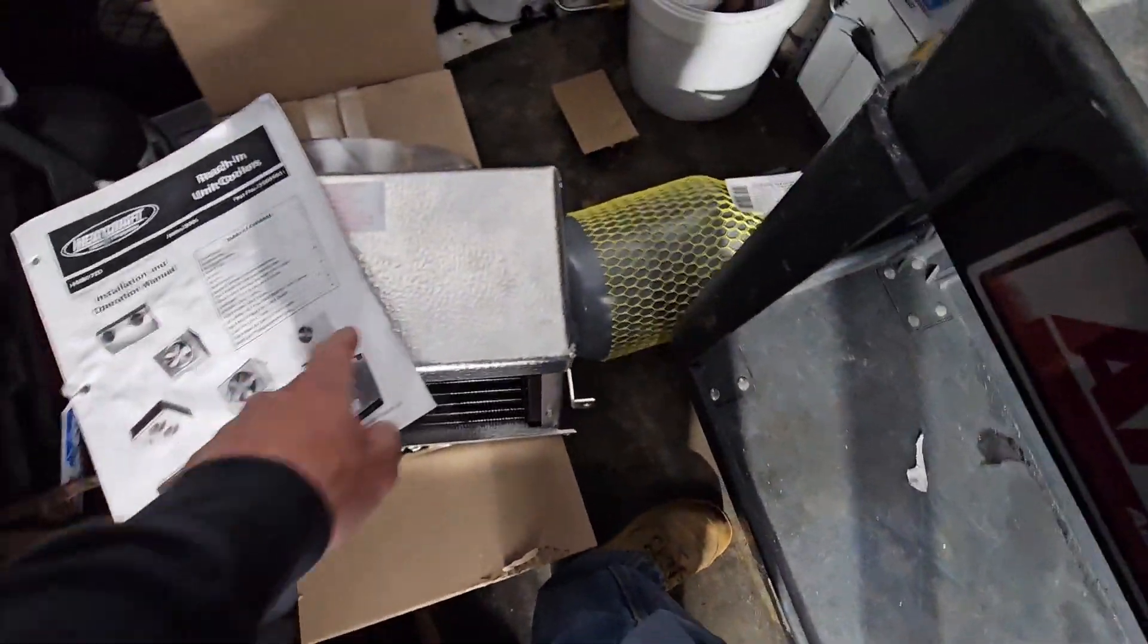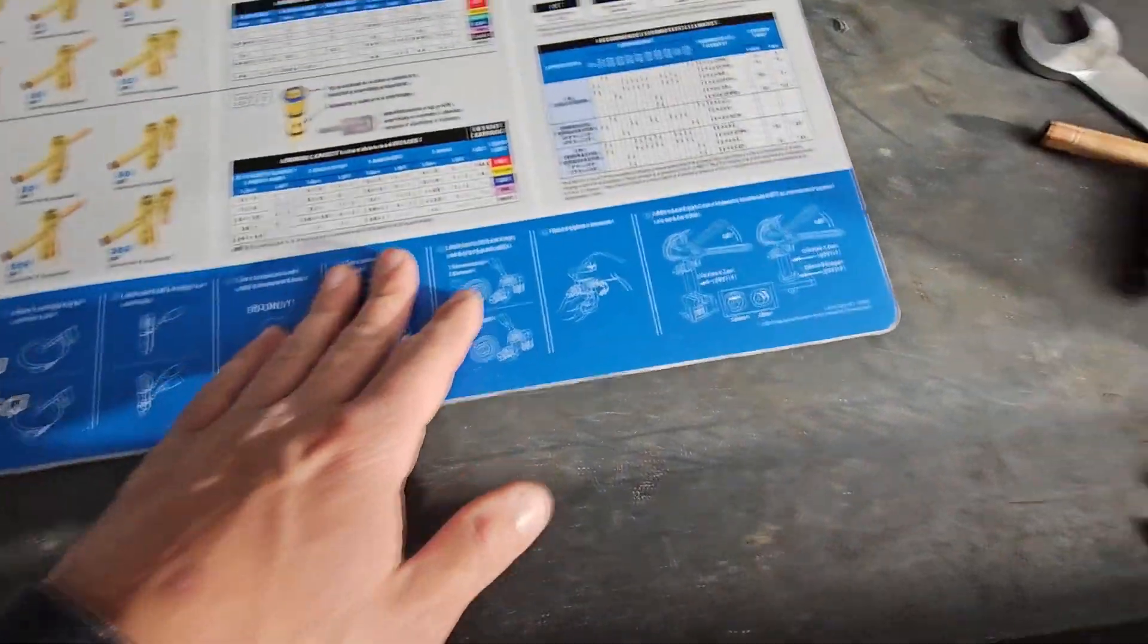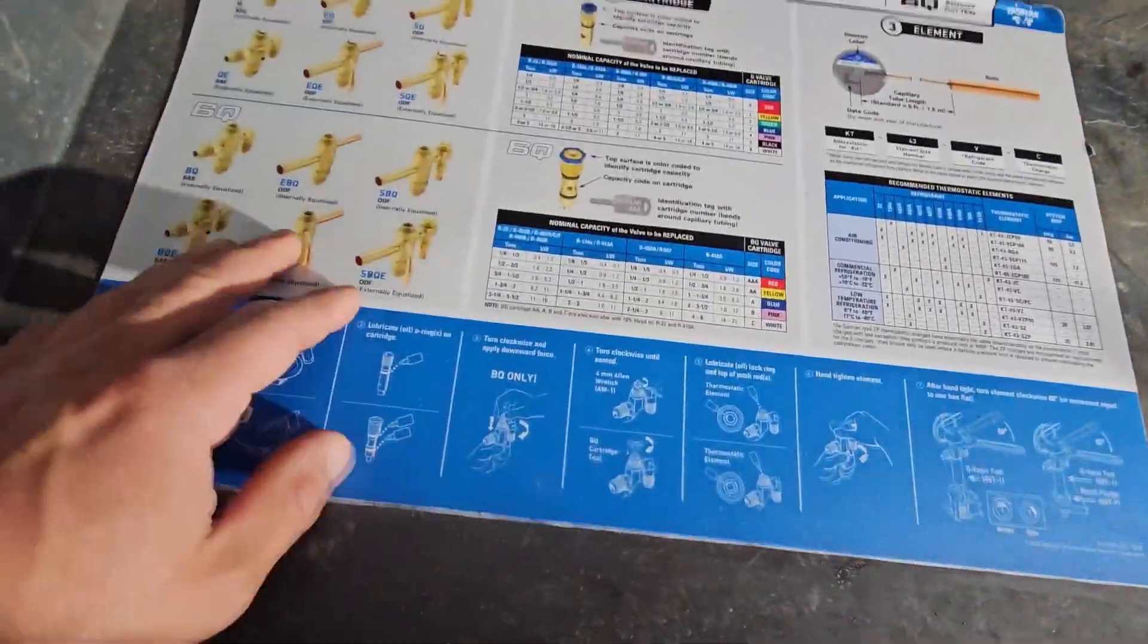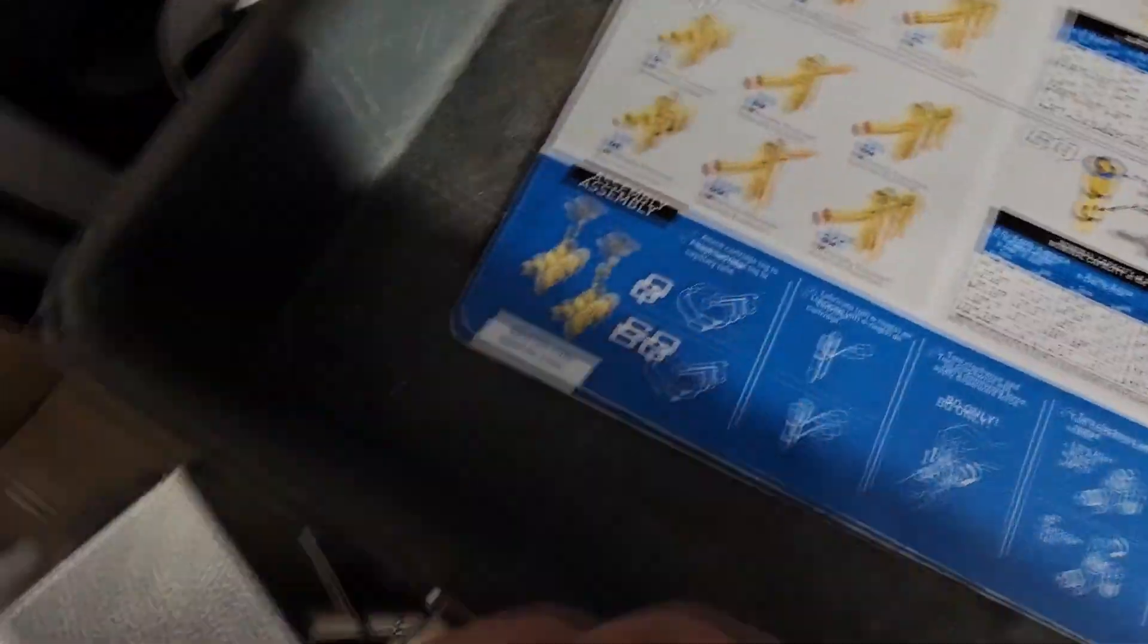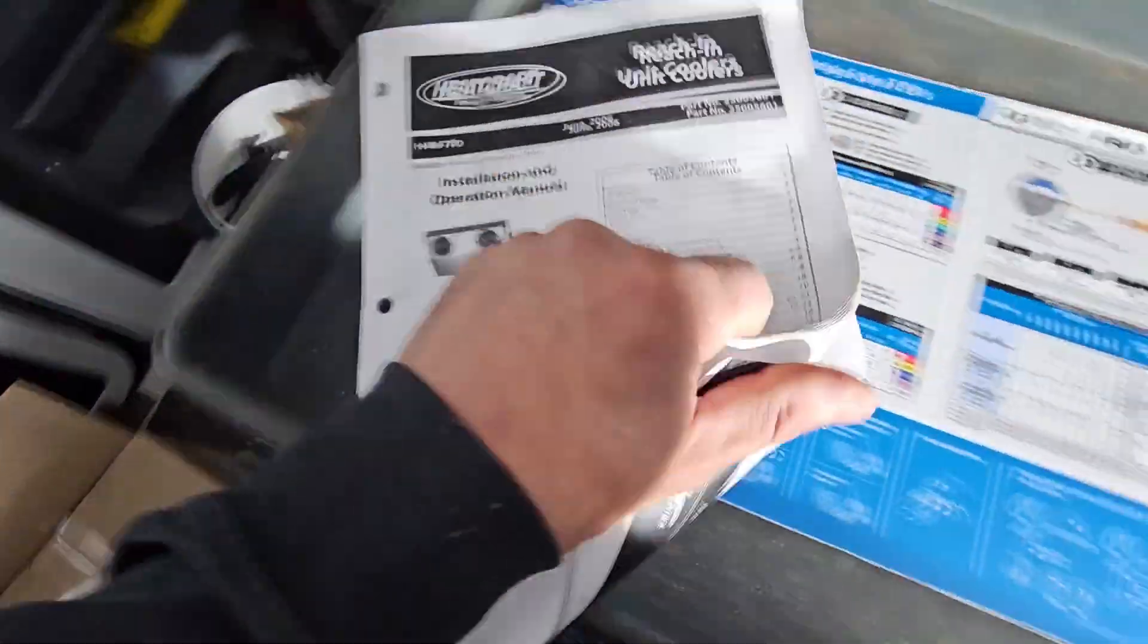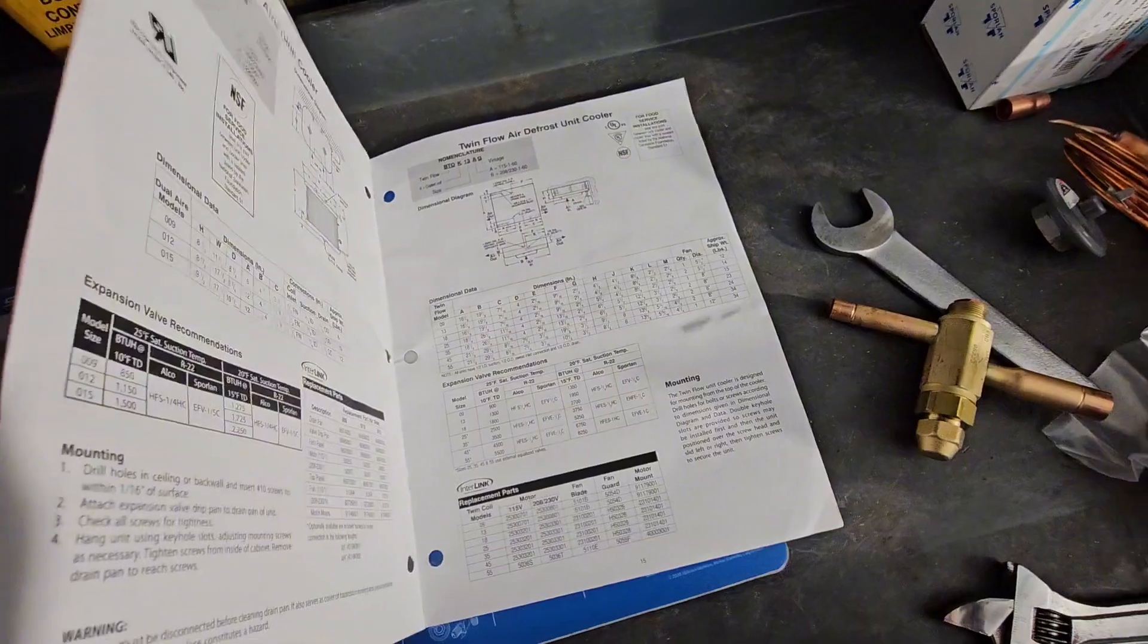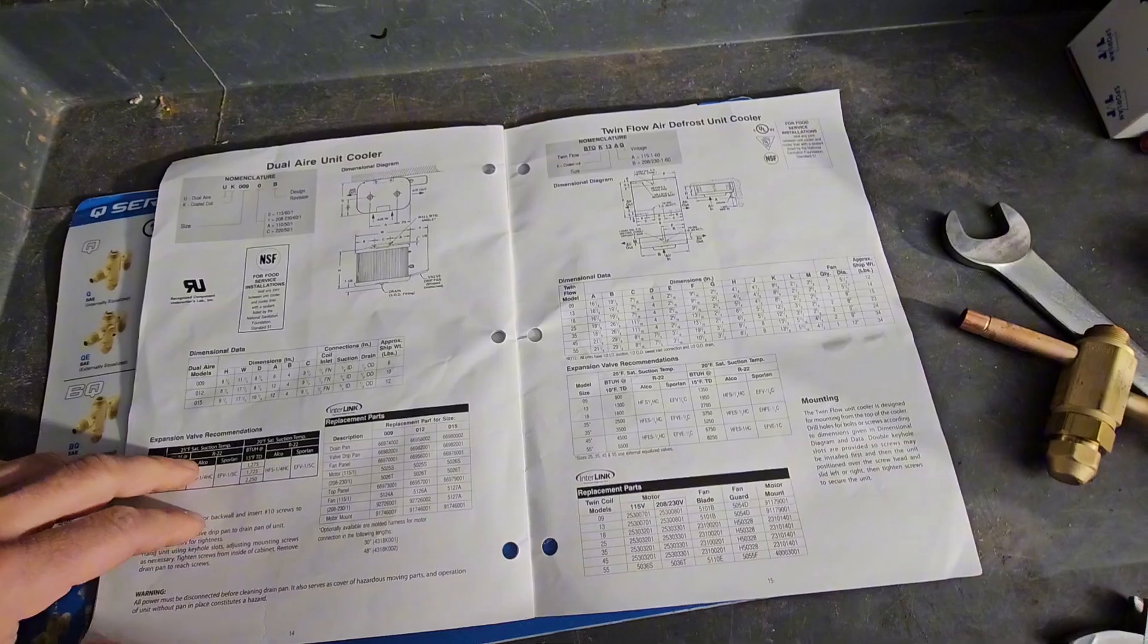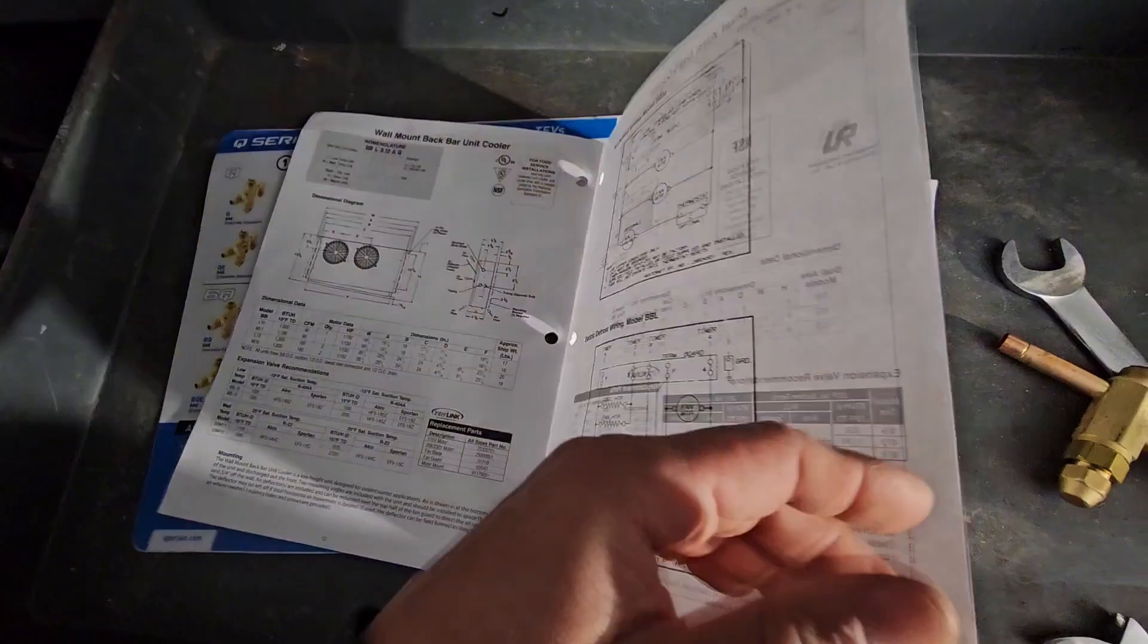So basically I'm gonna add my own valve. My line sizes inside are three eighths and quarter, so I got my Q kit here and I'm gonna choose.